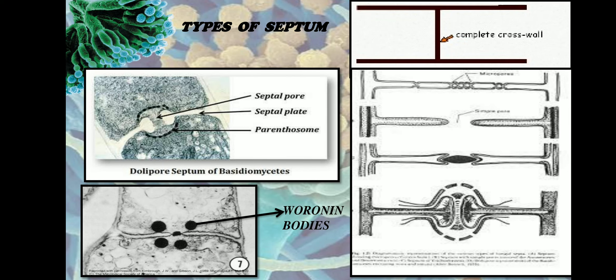If there is any damage to the fungal hyphae, the fungi employs a defense mechanism — it produces certain peroxisome-derived dense bodies. These dense bodies are called Woronin bodies, and they come and plug the septal pore.